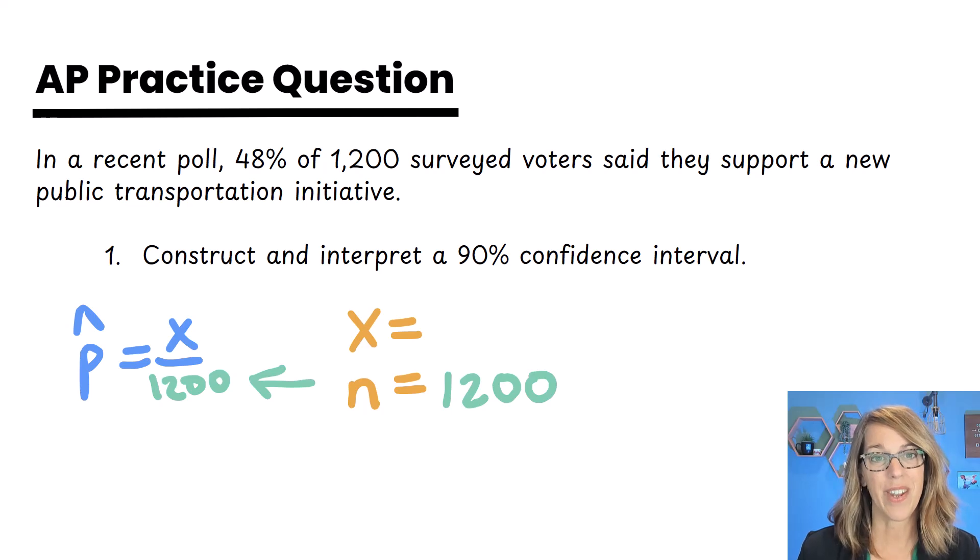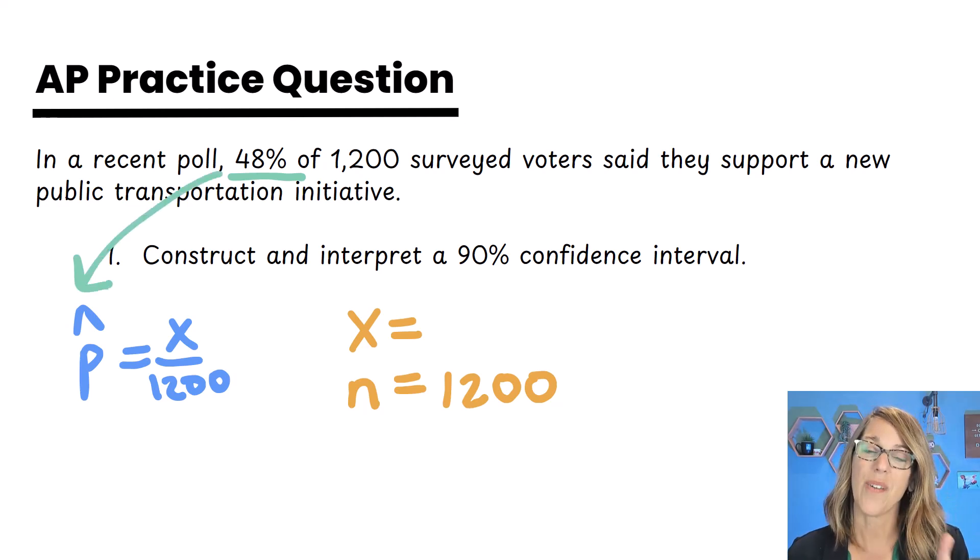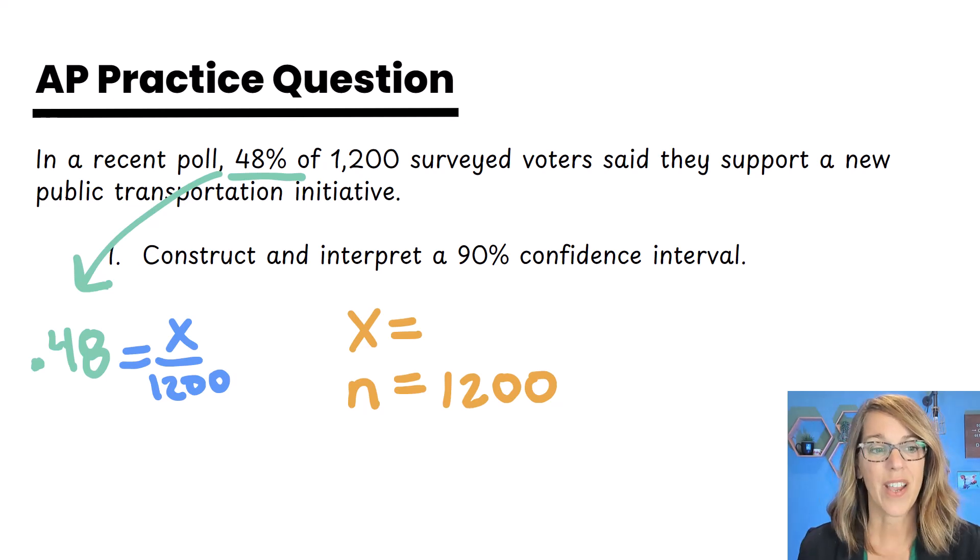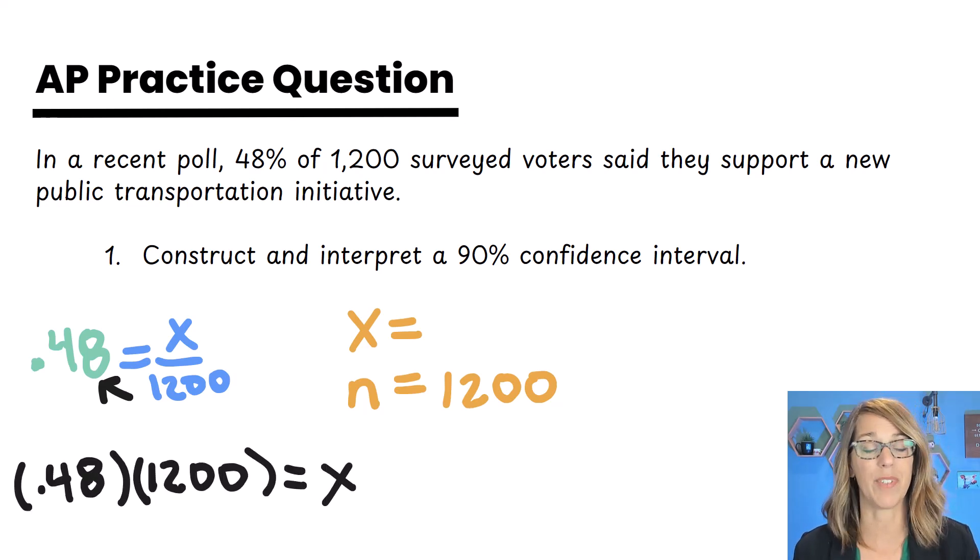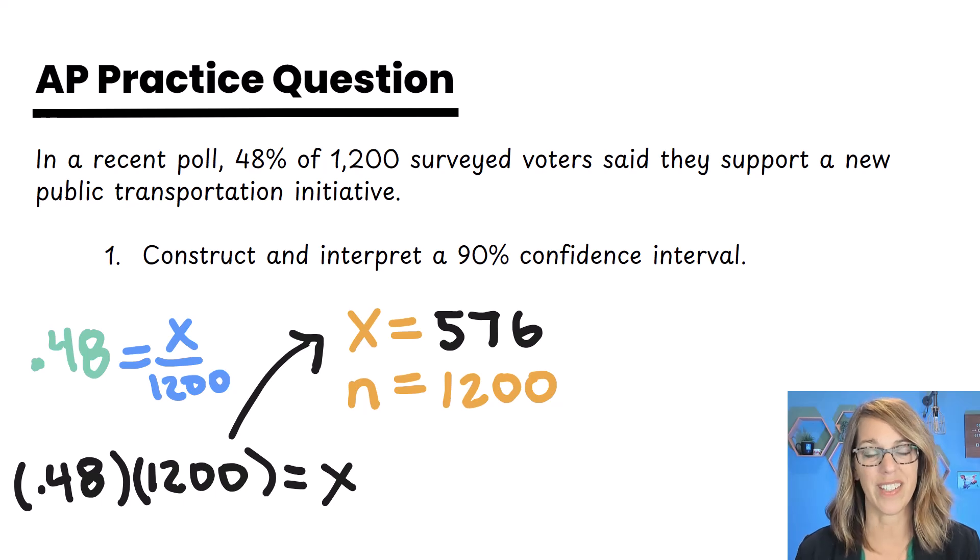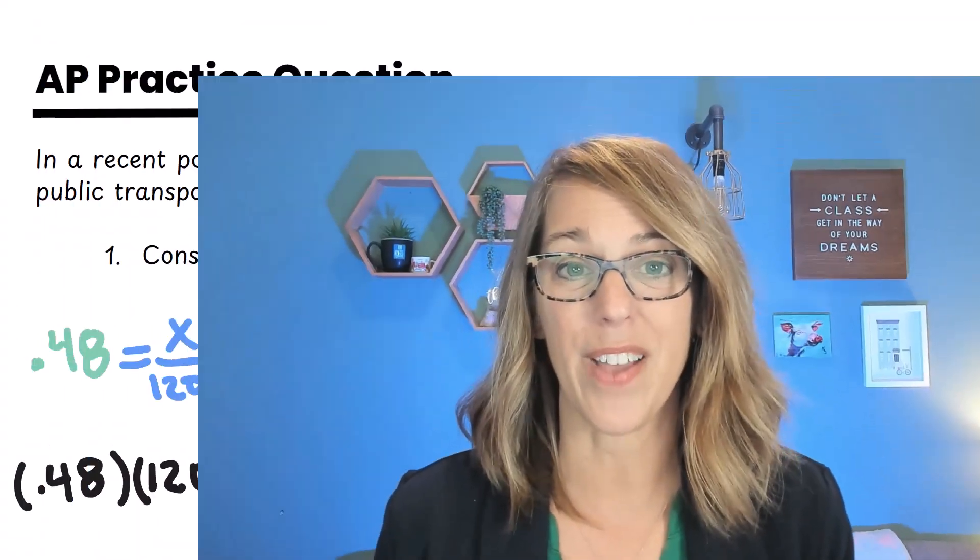The other number that I'm given is 48%. 48% is my sample proportion so I can replace p hat with 0.48. I want to solve this for x because my calculator needs that x number. If I cross multiply I'm going to take 48% or 0.48 times 1200 to get my value of x. I can compute this in my calculator and I get 576 but I'm going to show you an easier way to do this as you're typing your values in.